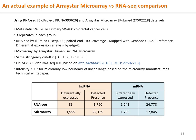The lncRNA profiling results by ArrayStar lncRNA microarray are compared with RNA sequencing using metastatic colorectal cancer cell line SW620 and primary cancer cell line SW480, with the same stringency cutoffs of fold change, base expression, and FDR. Even at 10G sequencing coverage — steeper than typical 6G mRNA sequencing — fewer than 100 differentially expressed lncRNAs are detected by RNA sequencing, whereas close to 2,000 differentially expressed lncRNAs are detected by ArrayStar lncRNA microarray. For mRNAs, microarray and RNA sequencing are on par at about 1,500 differentially expressed mRNAs.